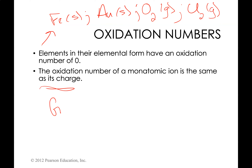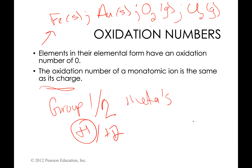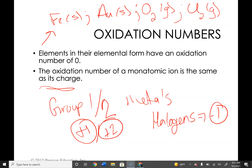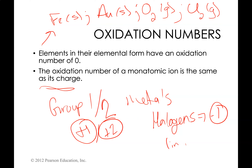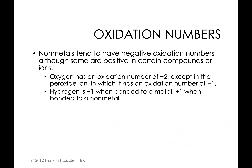For instance, group one metals are plus one and group two metals are plus two. The halogens typically end up being minus one. We will see examples when halogens do not behave that way — most of the time it has to do with the fact that they are in polyatomic ions. So make sure you note that the monatomic ion rule is not always true for halogens in polyatomic ions, such as hypochlorite, chlorate, bromate, and iodate.